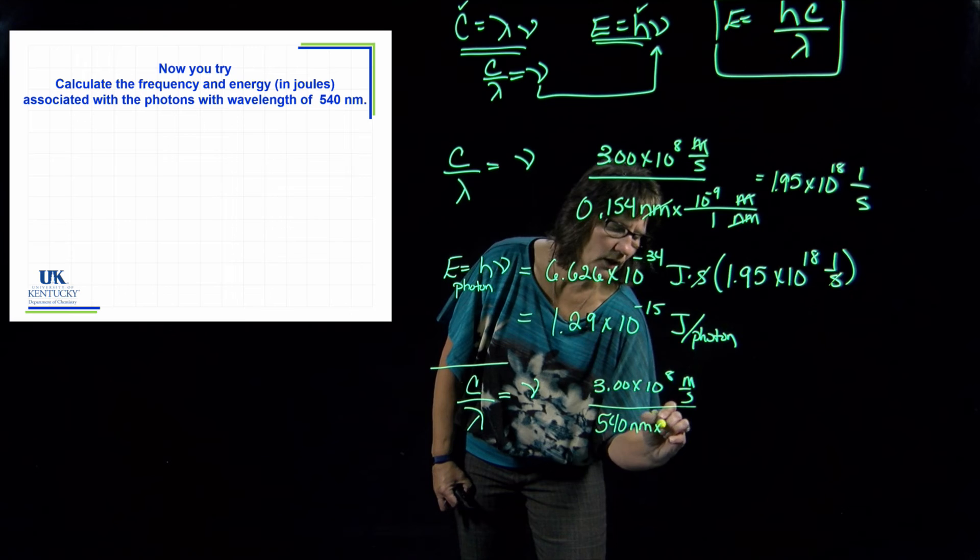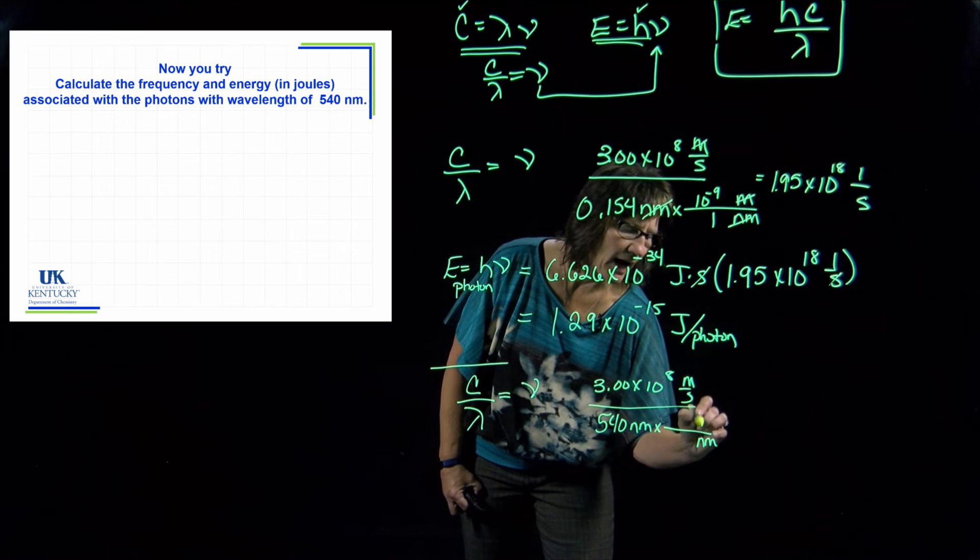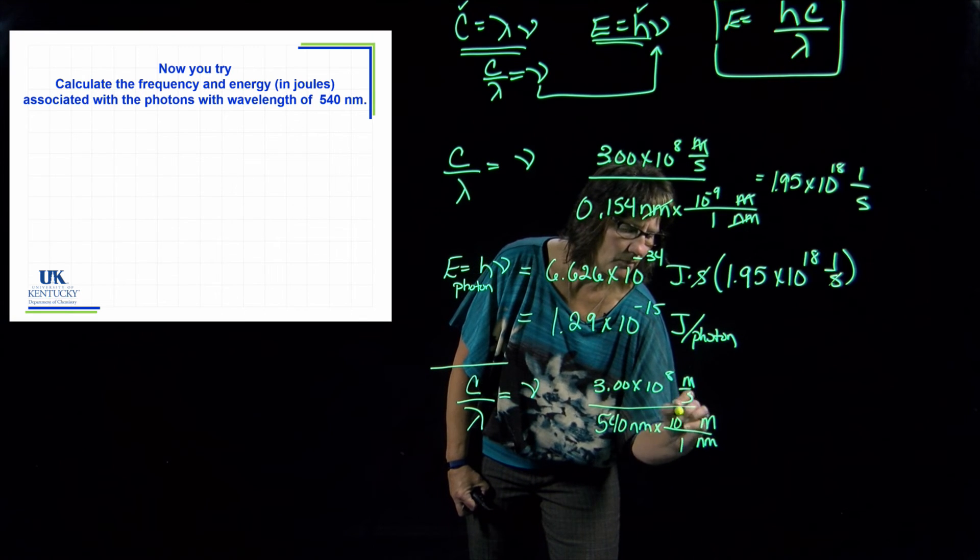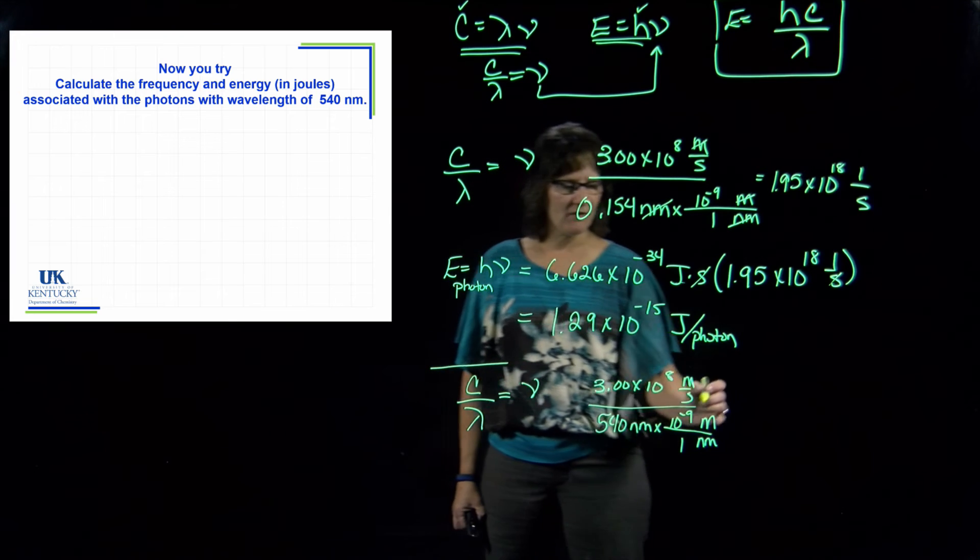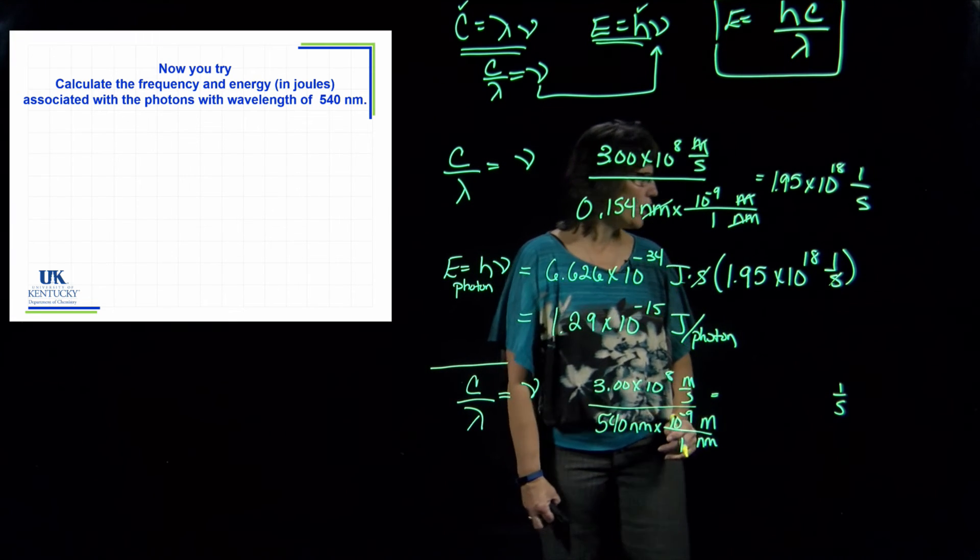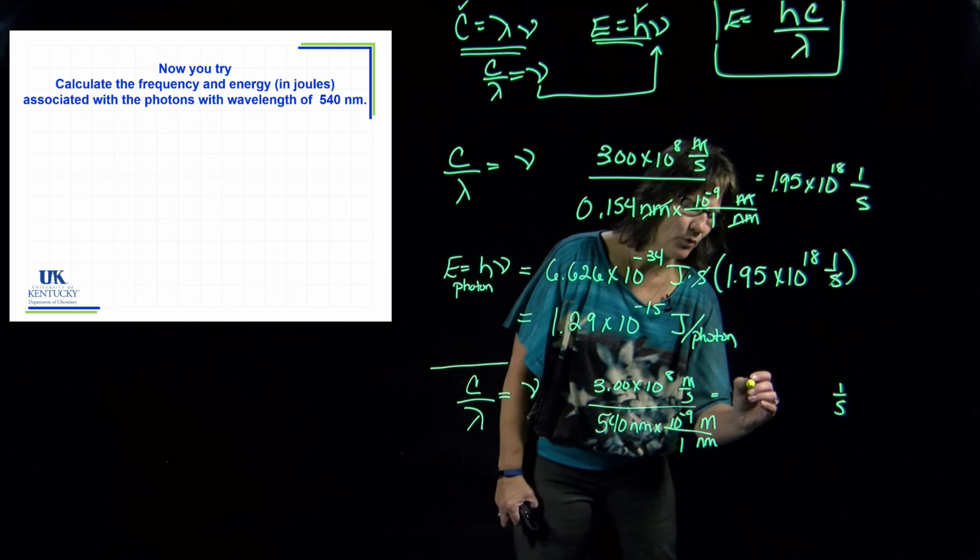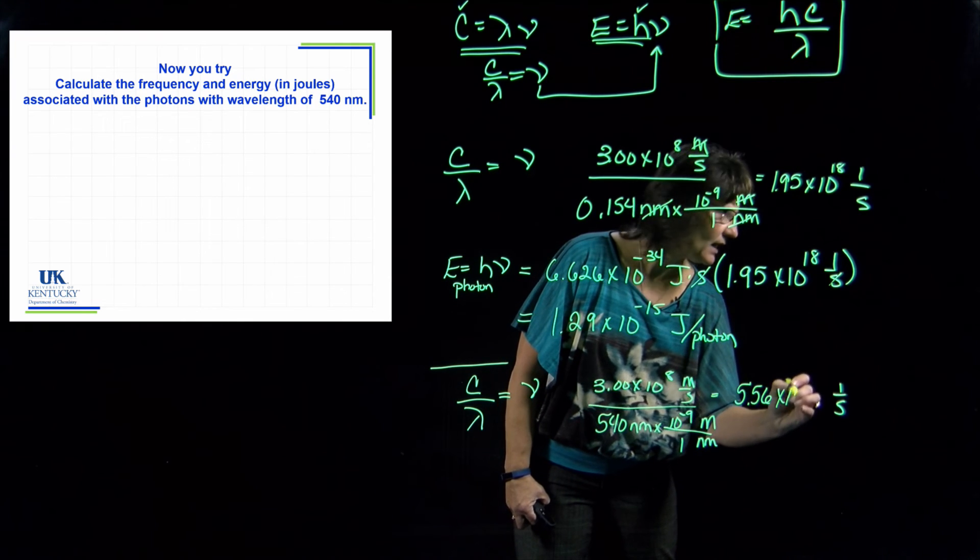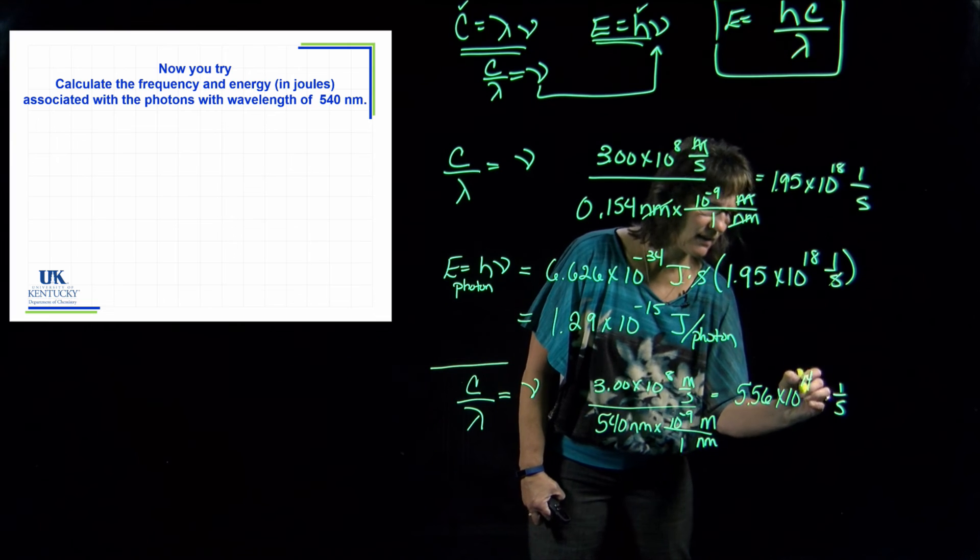540 nanometers. I don't want to leave it as nanometers; I want to have it in meters, and that will give me the frequency in units of one over seconds. The value is 5.56 times 10 to the 14th.